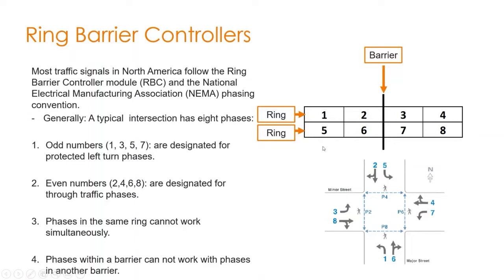What 'protected' or 'protected permissive' means is that the protected portion of the phase operates with an arrow — it operates under a phase on its own. If the left turn exists but does not have a protected portion, it will operate under a solid green ball.